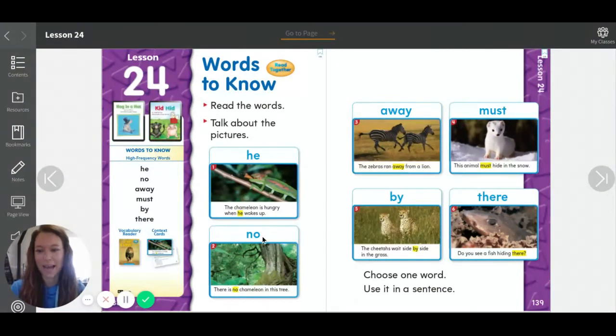This one, repeat after me: no, N-O. There is no chameleon in this tree. What is this word? And how do you spell it? Good.